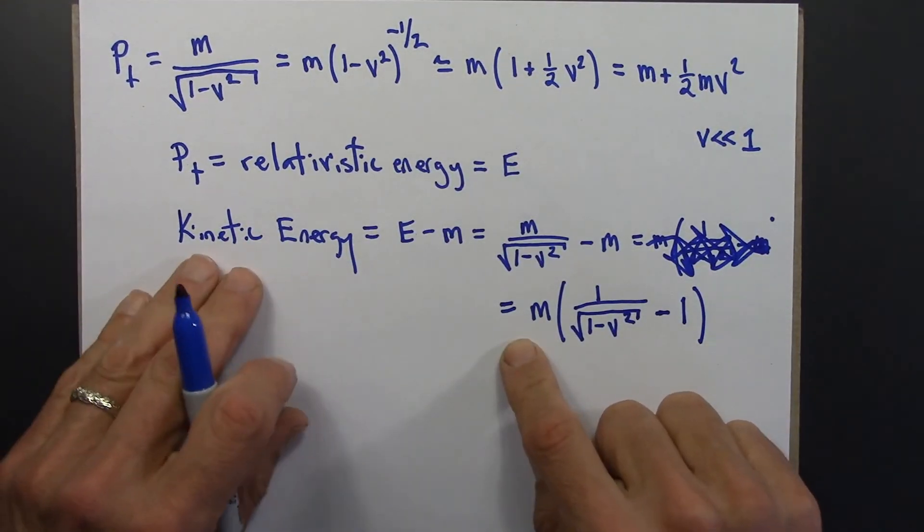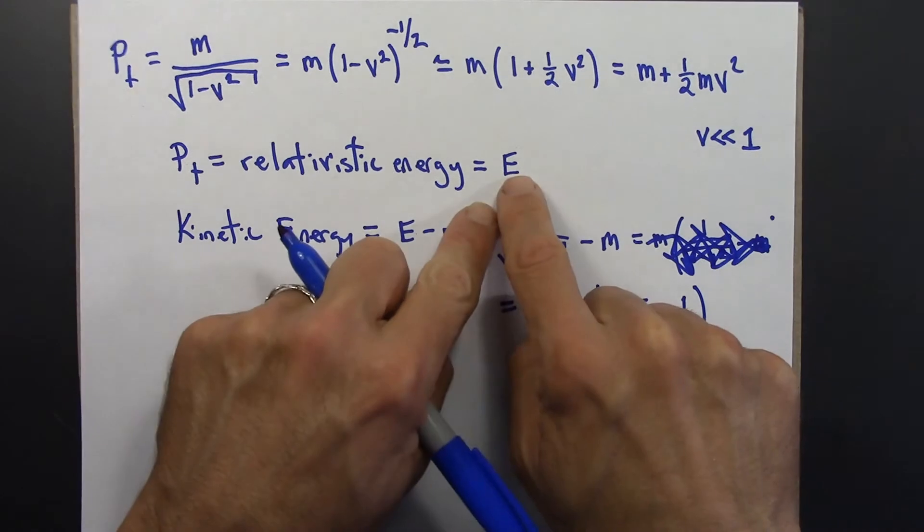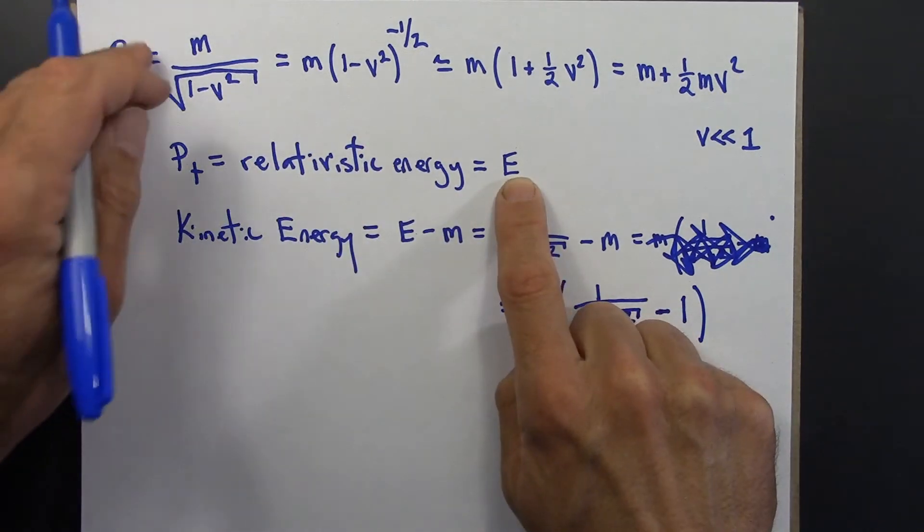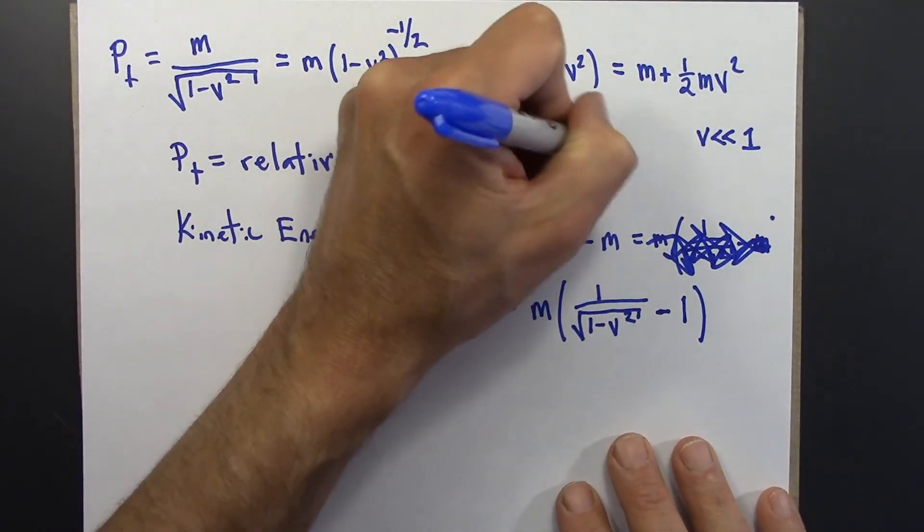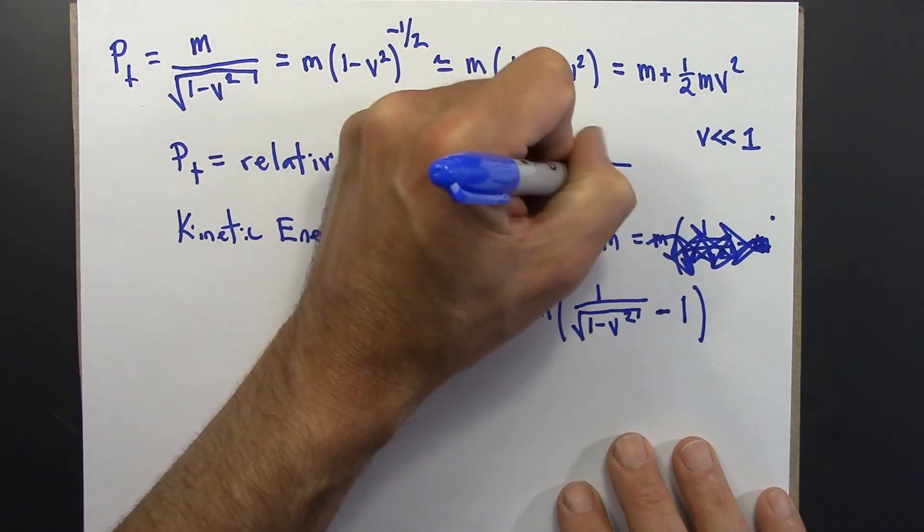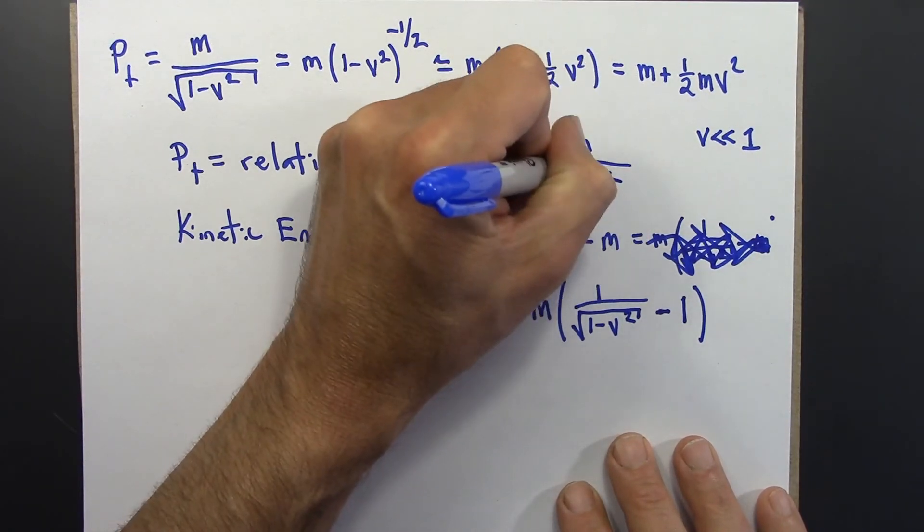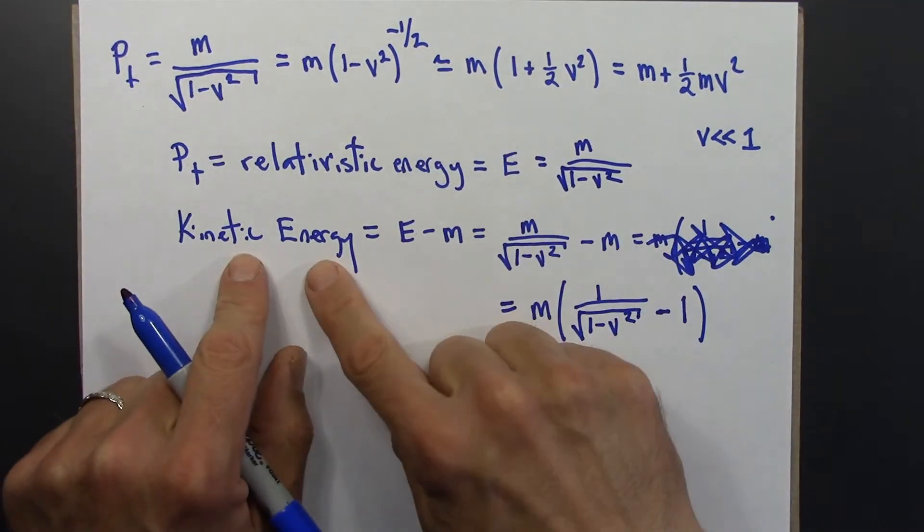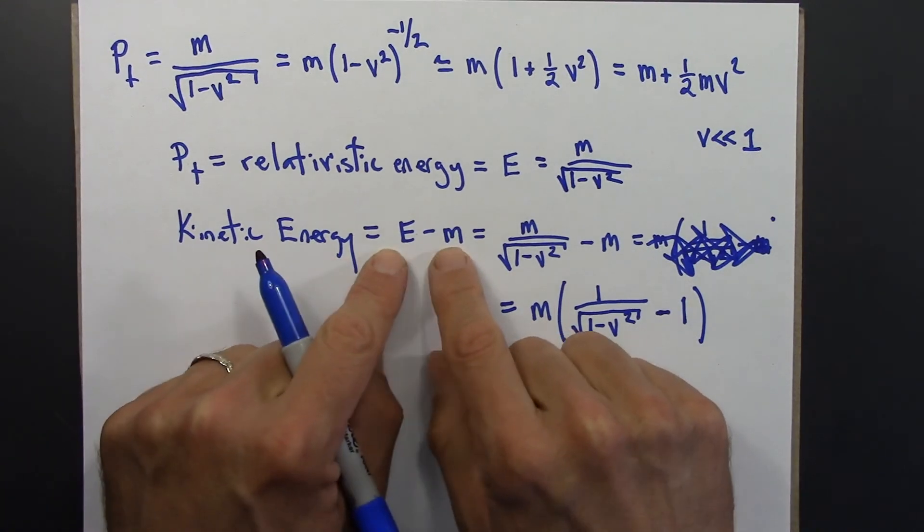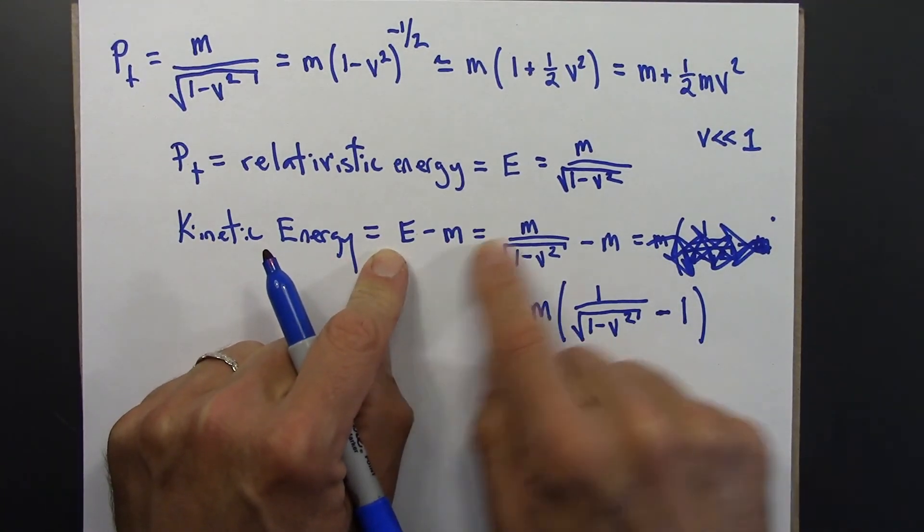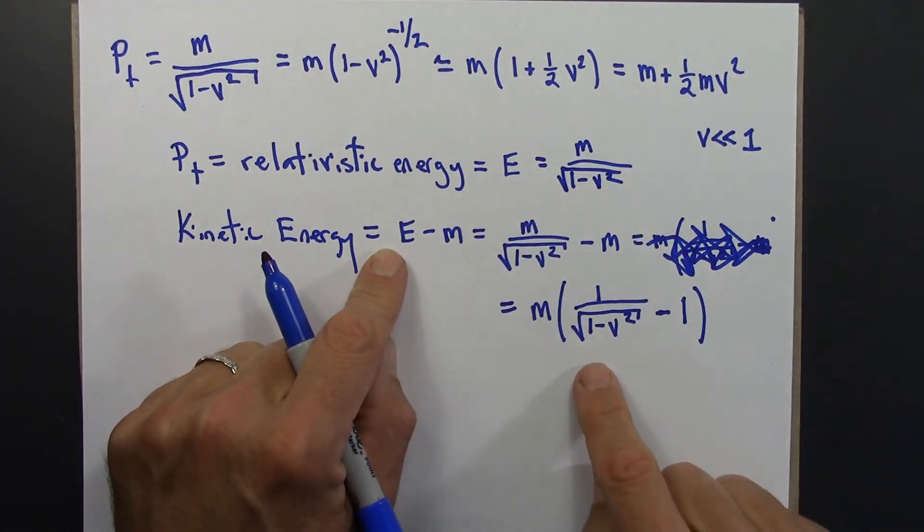Okay, so relativistic energy is given by this. Maybe I'll write that one more time. And the relativistic kinetic energy is E minus m. We subtract off the m, which is this, or we can write it like this.